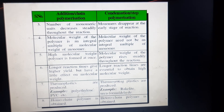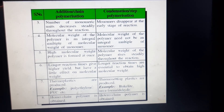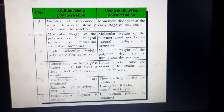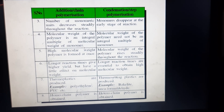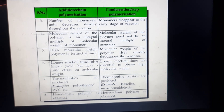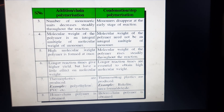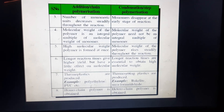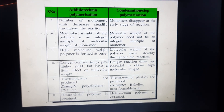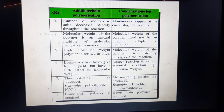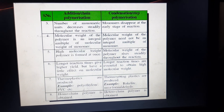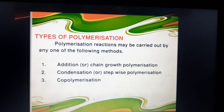Seventh point: addition polymers are thermoplastics — for example, polyethylene and PVC. In condensation polymerization, thermosetting plastics are produced — for example, bakelite and urea-formaldehyde. Eighth point: homochain polymers are obtained in addition polymerization, meaning the same kinds of monomers are present in the polymer chain. Heterochain polymers are obtained in condensation polymerization, meaning different kinds of monomers are present in the carbon backbone.